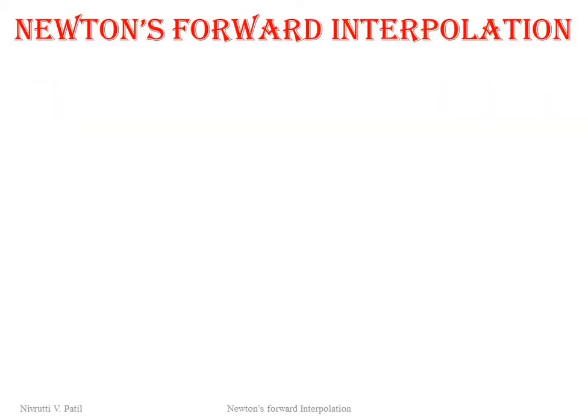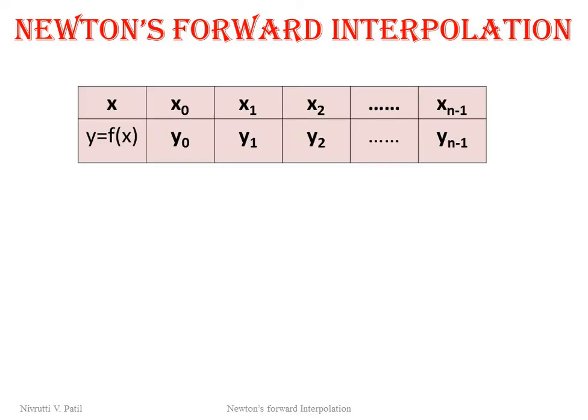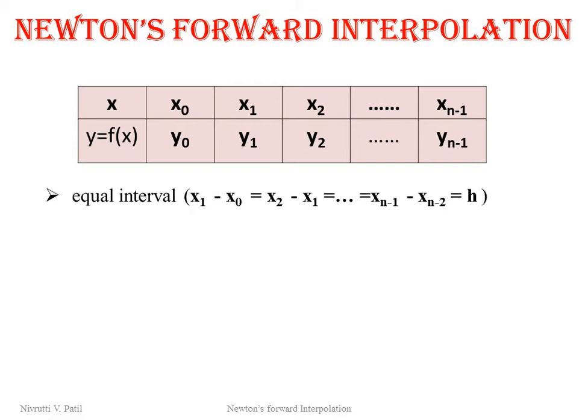Suppose we have given the values of x and y — the x values starting from x0 to xn minus 1 and y values from y0 to yn minus 1. If the x values are equispaced, that is the difference between consecutive values of x is similar for all values, then we can use Newton's interpolation method.